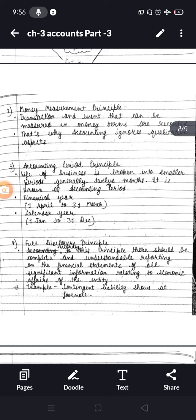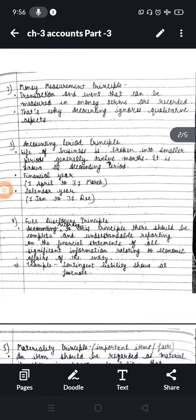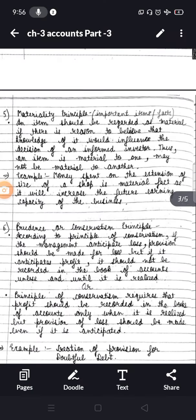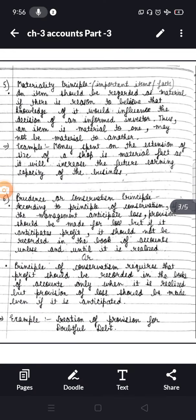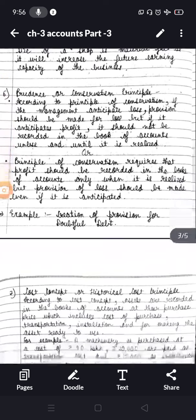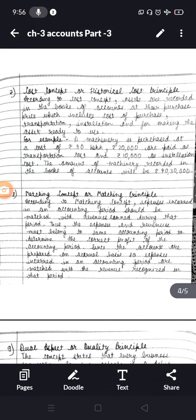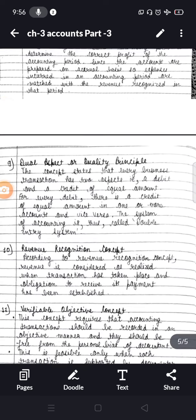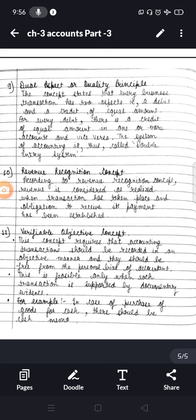Money Measurement Principle, Accounting Period Principle, Full Disclosure Principle, Materiality Principle, Prudence or Conservatism Principle, Cost Concept, Matching Concept, Dual Aspect or Duality Principle which is given by Pescioli, Revenue Recognition Concept, and Verifiable Objective Concept which is based on voucher and evidence.